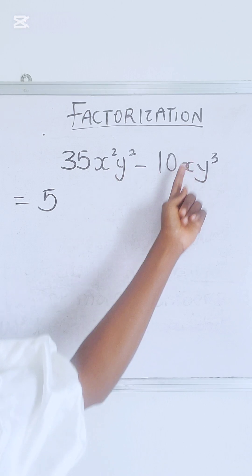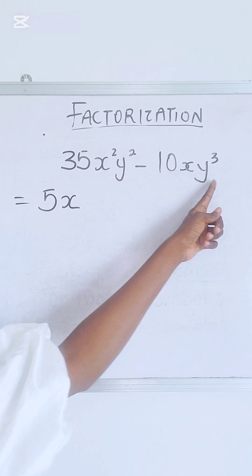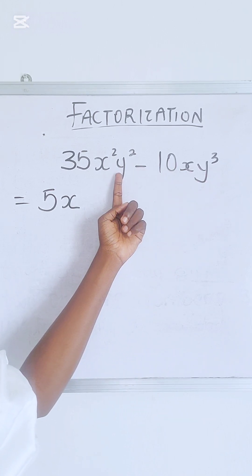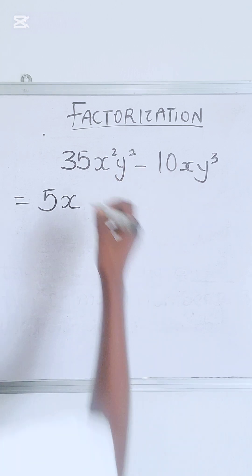Moving on, we have y and we have y. Y has a power of two, y has a power of three, so pick the one with the lower power, which is two.